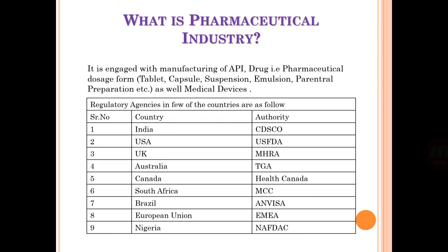Regulatory agencies in a few countries are as follows. India: CDSCO. USA: US FDA. UK: MHRA. Australia: TGA. Canada: Health Canada. South Africa: MCC. Brazil: ANVISA. European Union: EMEA. Nigeria: NAFDAC. This table is very important information about regulatory agencies.